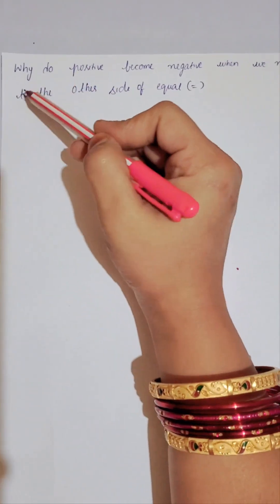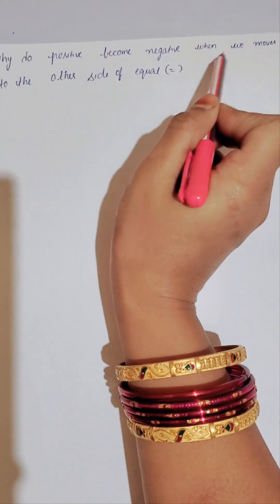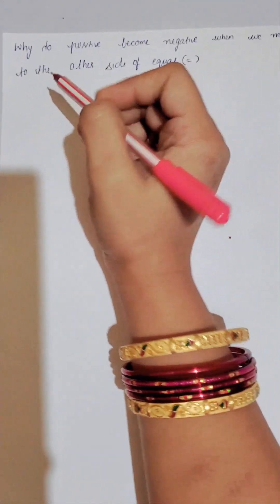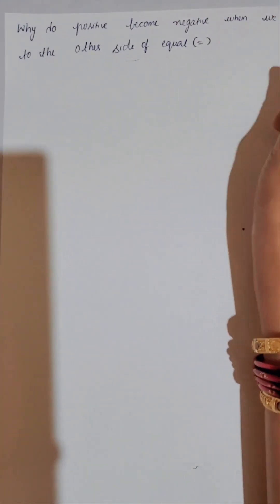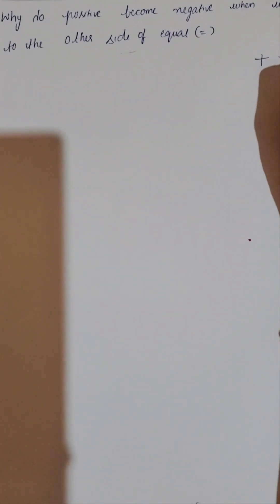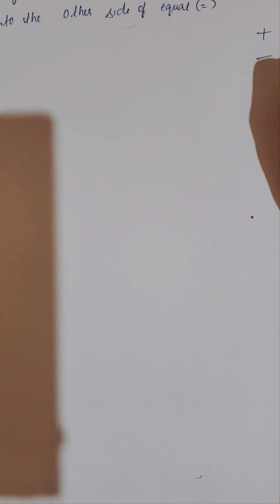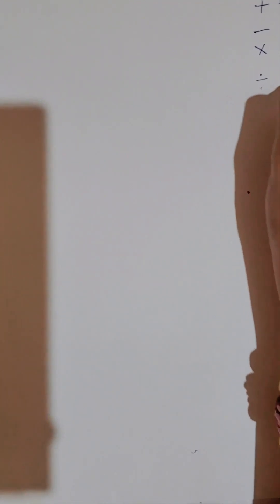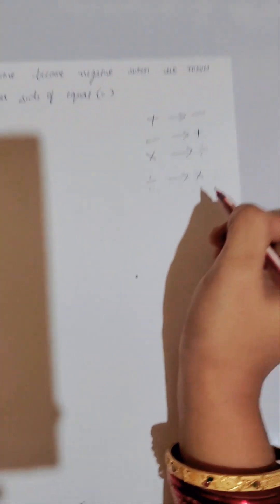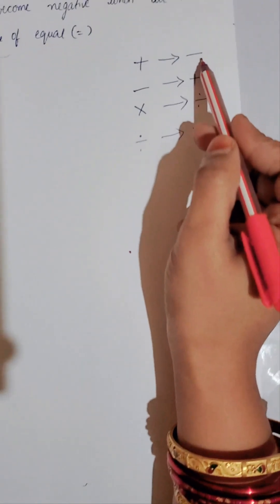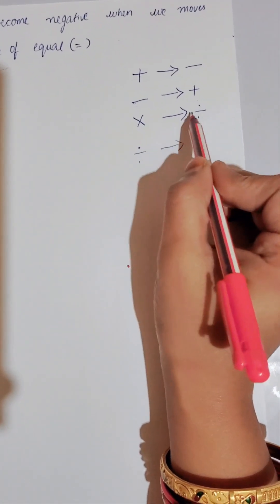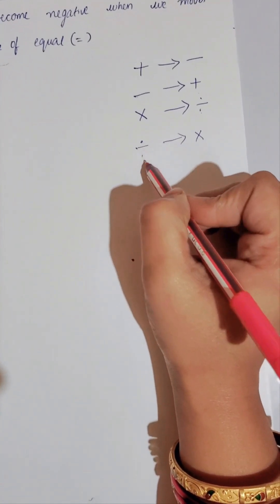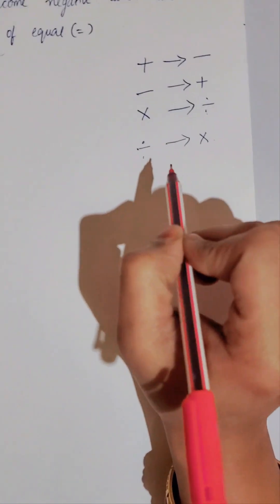Hi friends, this is Sayyad Reshma Sharif. In this video lecture today I am going to discuss why positive becomes negative when we move to the other side of an equals sign. It's not only positive that becomes negative — negative becomes positive too. Multiplication becomes division, and division becomes multiplication when moved across the equals sign.